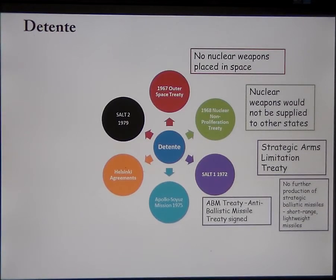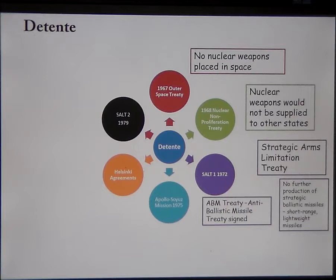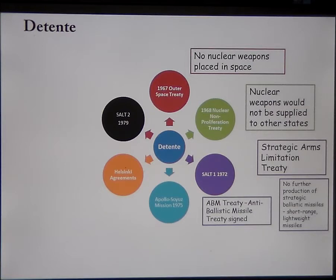They agree the ABM — the Anti-Ballistic Missile Treaty — which states that only two sites can be developed by each side, containing 1,000 missiles each. This is a clear recognition of the need to protect the nuclear balance by ensuring neither side could ever consider itself immune from retaliation. An ABM system would destroy missiles before they could hit, but if you can only protect two sites, neither side gains an advantage.